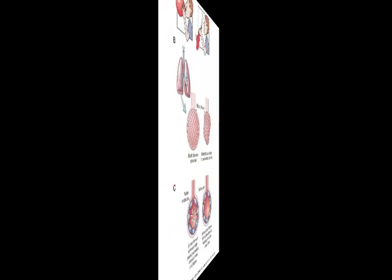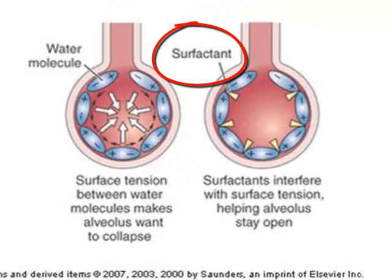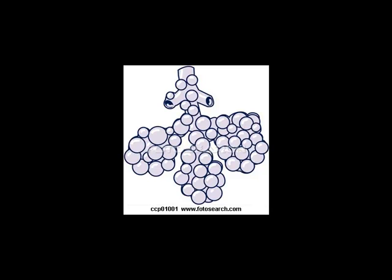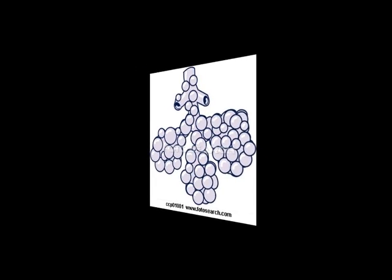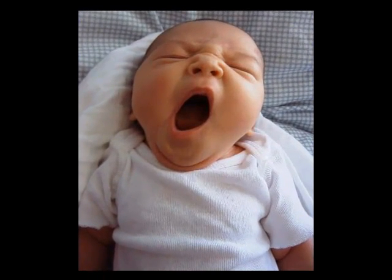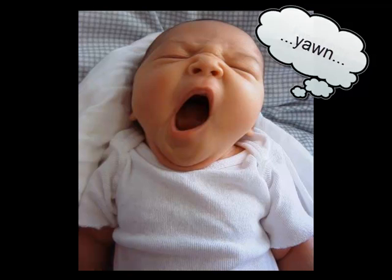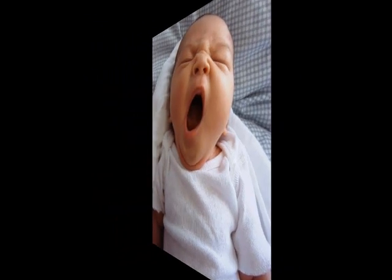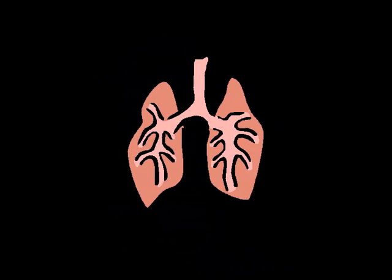The alveoli don't collapse because the body produces surfactants. Surfactants are special proteins that wedge themselves in between the water molecules and disrupt the surface tension — they don't eliminate it completely, but they disrupt it enough that the alveoli are able to expand. Specialized cells in the lungs secrete surfactants. Every couple of breaths, we take a deeper breath, and that deeper breath is our body's way of getting those surfactants released. Surfactants disrupt the surface tension and allow the alveoli to remain open and expanded.